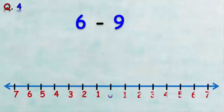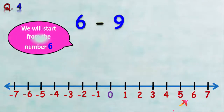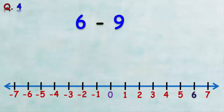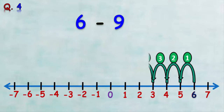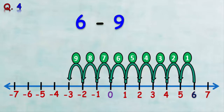Fourth example: find six minus nine. We draw a number line and start at number six, then we make nine backward jumps: one, two, three, four, five, six, seven, eight, nine. Now we arrive at negative three, so six minus nine is negative three.